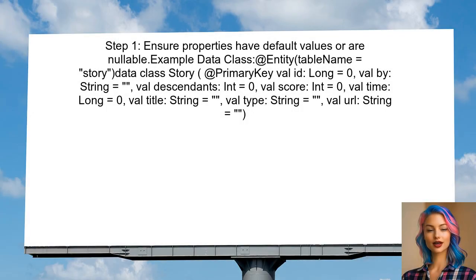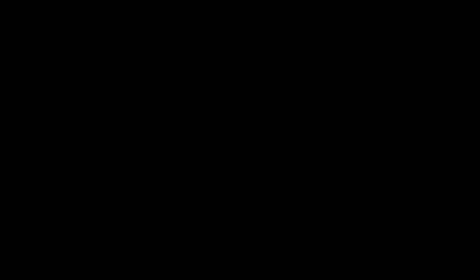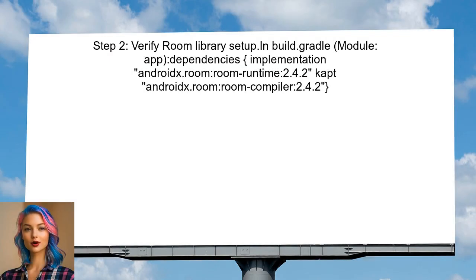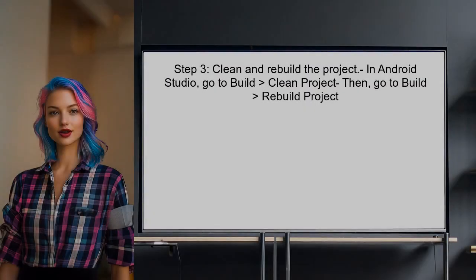To resolve the issue with the Room database in Kotlin, first ensure that all properties in the data class have either a default value or are marked as nullable. This is important because Room requires a way to instantiate the object without needing all values. Next, check that the Room library is correctly set up in the project, including ensuring the Room dependencies are included in the build.gradle file. After confirming the setup, clean and rebuild the project to resolve any lingering compilation issues.